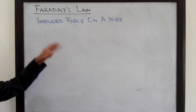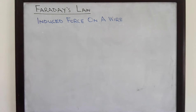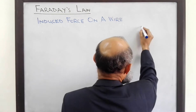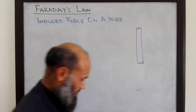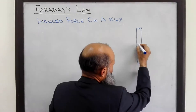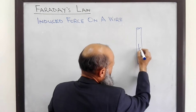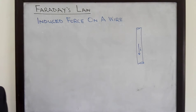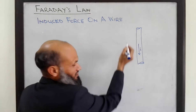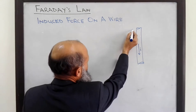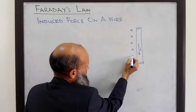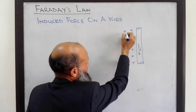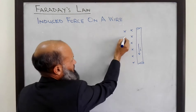To explain it, let's consider the situation depicted in this diagram. Here we have a current-carrying conductor. Current I is flowing in this conductor, and this conductor is placed in a magnetic field. The direction of the magnetic field can be denoted by dot and cross notation — here the flux density is directed into the surface of the board.